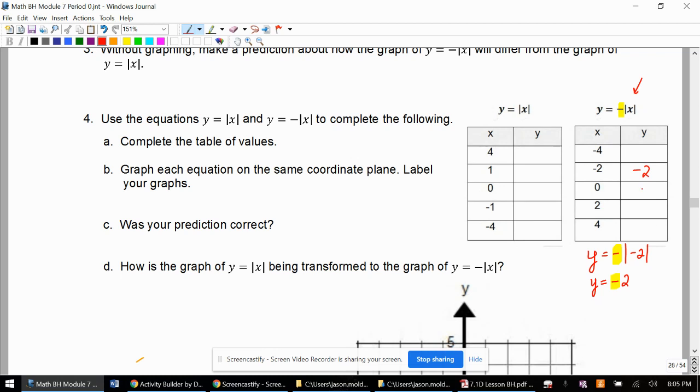0, well, negative 0, it's still going to be 0. 2, let's try that one. So absolute value of 2 is 2, and bring down the extra negative. So negative 2.